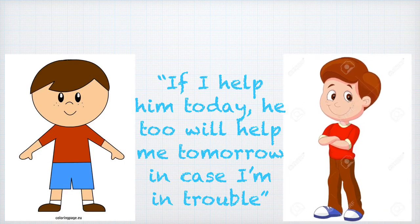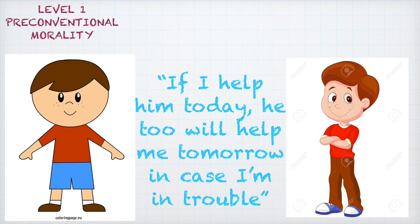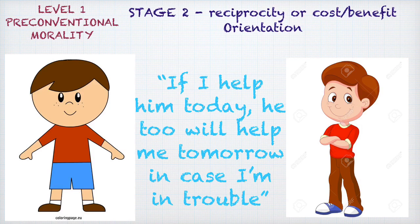His friend Teddy thinks that if he helps Ben today, Ben will help him tomorrow in case he is in trouble. This is indicative of Stage 2 of pre-conventional morality, where his response is primarily guided by reciprocity or a cost-benefit orientation.